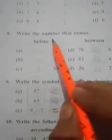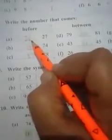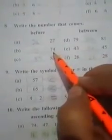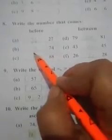Next part: Write the numbers that come before, between, and after. Before means what comes first. For example, 27 is the number - what comes before 27? Twenty-six. What comes before 24?